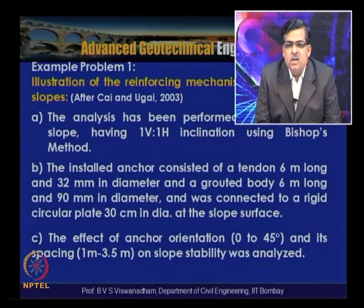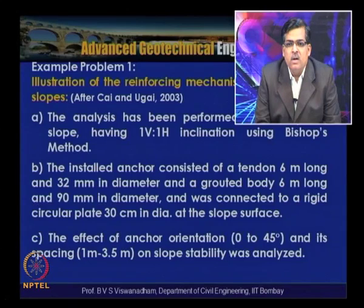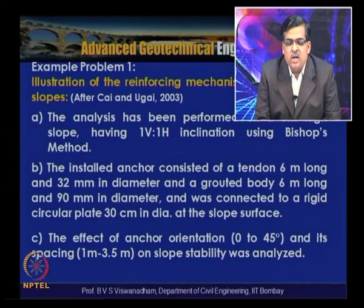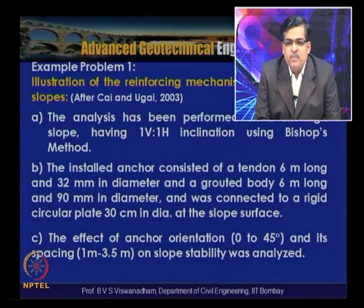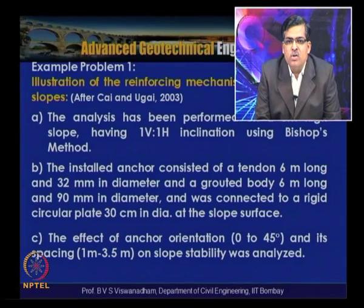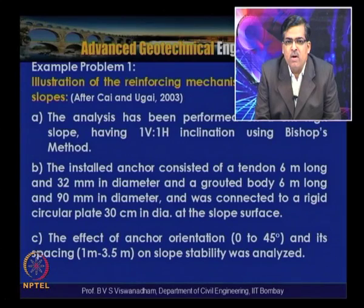The installed anchors consist of a tendon 6 meters long and 32 mm in diameter, and a grouted body 6 meters long and 90 mm in diameter. The tendon is connected to a rigid circular plate of 300 mm diameter on the slope surface. Anchor orientations with reference to horizontal varied from 0 to 45 degrees, and spacing along the slope surface ranged from 1 meter to 3.5 meters.